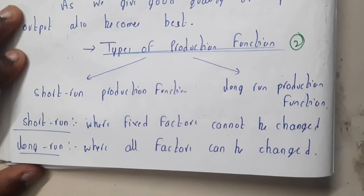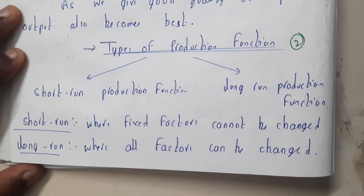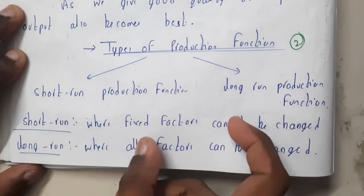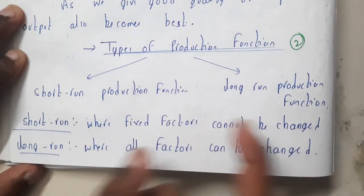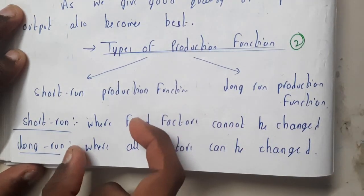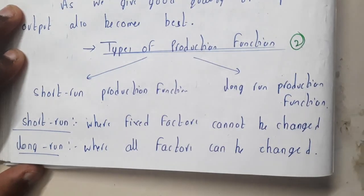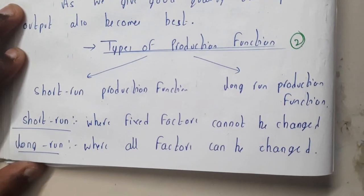Hello guys, we are back with our next lecture. In this lecture, let us go through types of production function. In our previous lecture we went through production function — a function where if you give a particular input you get some output. You give raw materials as input and get the end product at the output side.